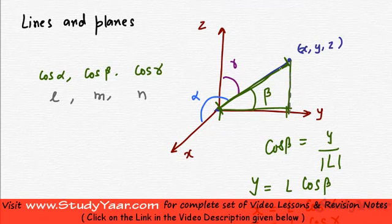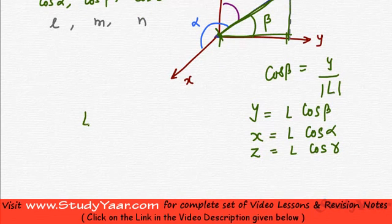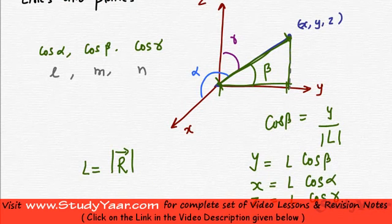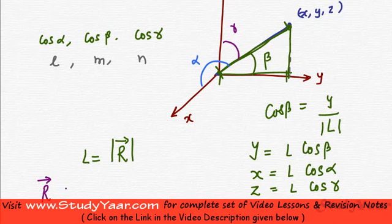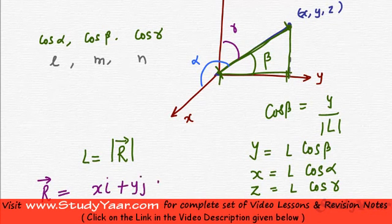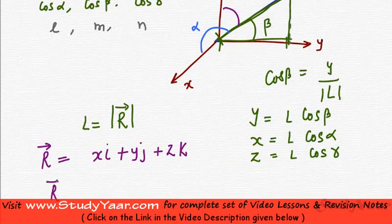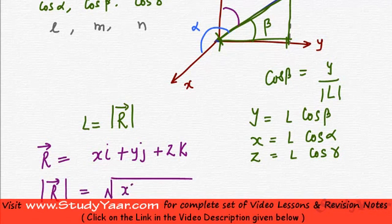This line we can also represent as a vector. Let us assume that L is the length of the vector representing this line. If you were to represent this vector, your vector R is essentially equal to Xi plus Yj plus Zk. Therefore, the modulus of this vector is equal to the square root of X squared plus Y squared plus Z squared.